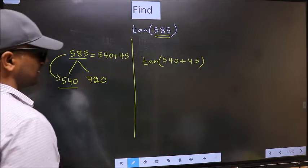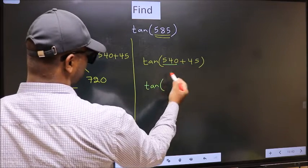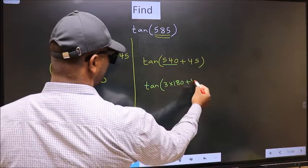Next, tan. In place of 540, now we should write 3 × 180 plus 45.